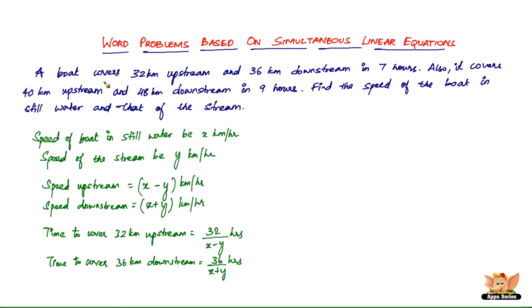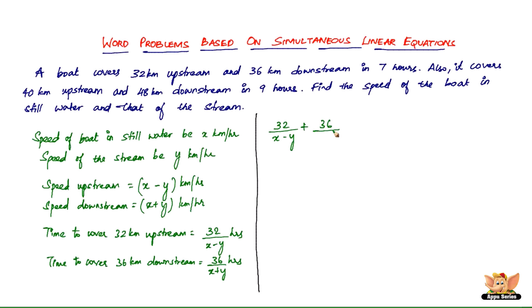The boat covers 32 kilometers upstream and 36 kilometers downstream in a total of 7 hours. So we add the two times to get 7 hours. The first equation is: 32 divided by (x minus y) plus 36 divided by (x plus y) equals 7.